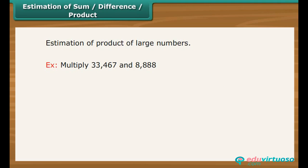For example, multiply 33,467 and 8,888. Rounding of 33,467 is equal to 33,000. Rounding of 8,888 is equal to 9,000.